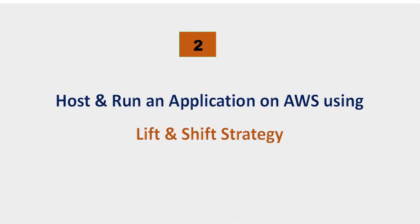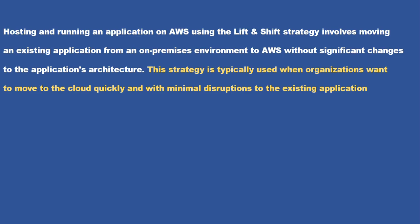The second one is host and run an application on AWS using the lift-and-shift strategy. Hosting and running an application on AWS using lift-and-shift involves moving an existing application from an on-premise environment to AWS without any significant changes to the application's architecture. It's just like you're lifting something and then shifting it to another place — there is no redesigning. You just lift the application from on-premise to AWS cloud.